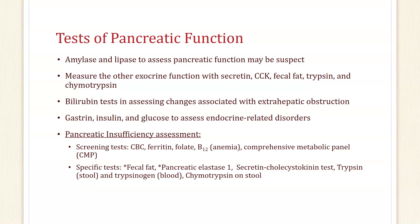Amylase and lipase are used to assess pancreatic function, but sometimes results can be suspect. For example, it is possible to have chronic pancreatitis and have normal amylase and lipase levels. Normally, amylase and lipase can be elevated in acute pancreatitis. You can also measure other exocrine function of the pancreas with secretin, CCK, fecal fat, trypsin, and chymotrypsin levels. So amylase and lipase are not the only tests of exocrine function of the pancreas.